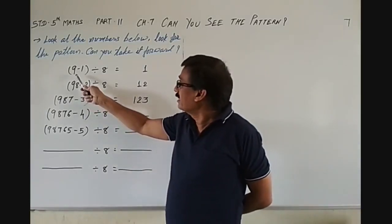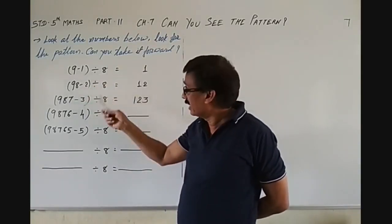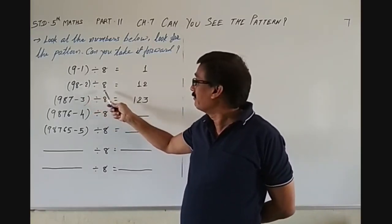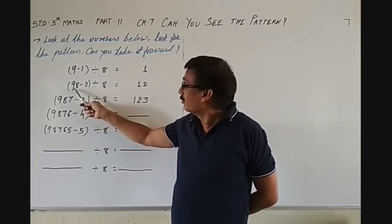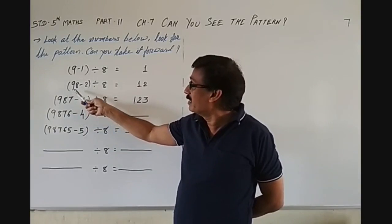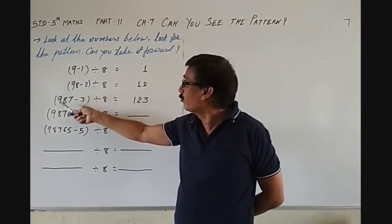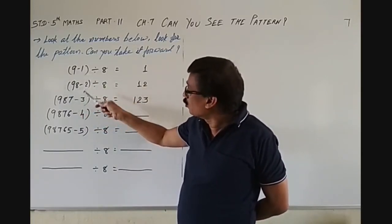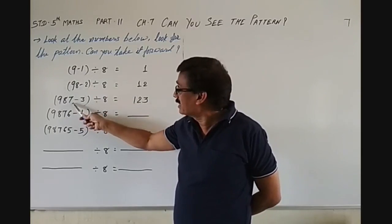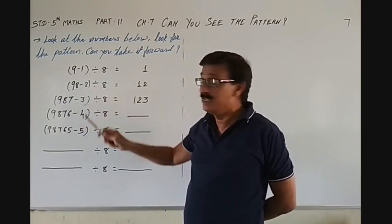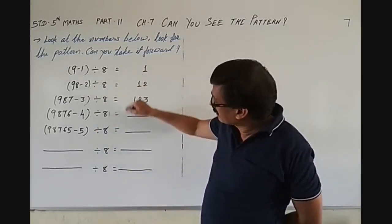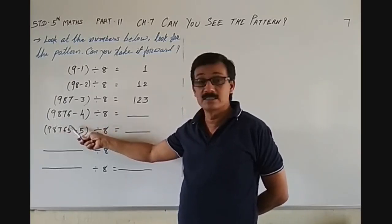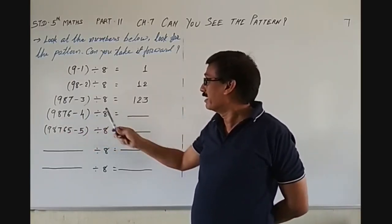First of all, let's try to understand what is here. You can see: 9 minus 1, divided by 8. Then, 98 minus 2, divided by 8. One digit is decreasing — you can see 9, 8. Now 9, 8, 7. First it was 1, then 2, then 3. So 987 minus 3, divided by 8. Every time it is divided by 8. Now here you can see 4 digits: 9, 8, 7, 6, minus 4, divided by 8.